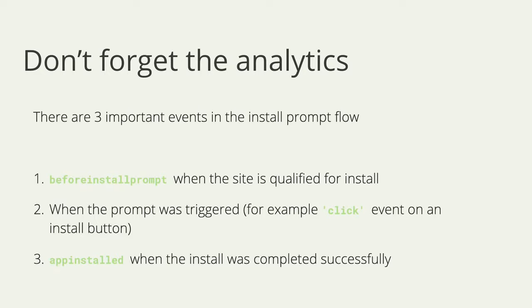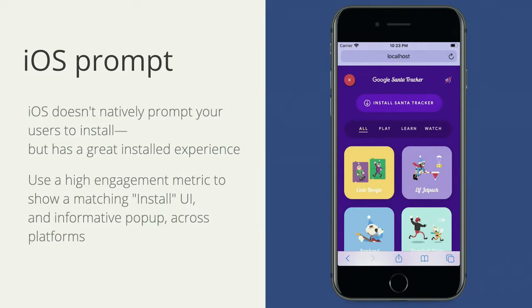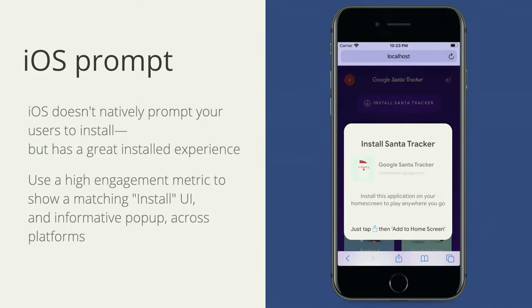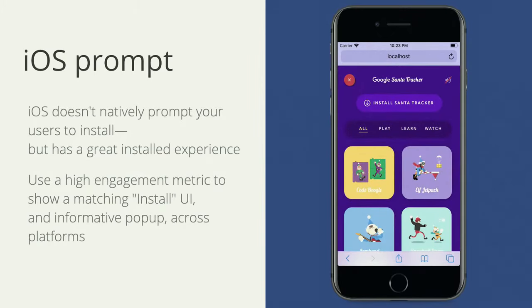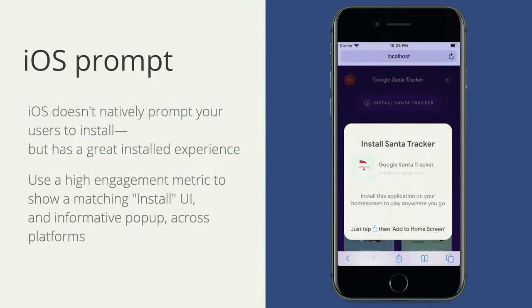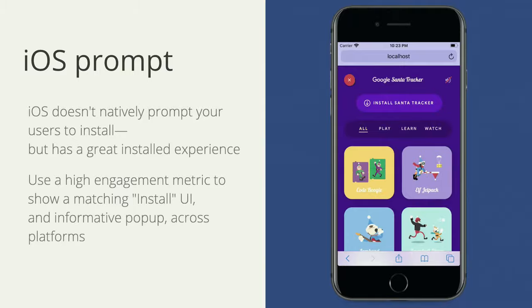Make sure you have instrumented your analytics. The three things to track are: the Before Install Prompt event (when the site has qualified for install), the click event on your install UI element (attach a click handler and add it to your analytics), and the App Installed event that fires when the user has successfully installed the app from the browser. On iOS, Safari has had support for service workers for quite a while, and it's easier than ever to install PWAs. We created a promotion for Santa Tracker where the button looks the same on Android and iOS — on iOS, we pop up a web UI to explain how to use the Add to Home Screen option.